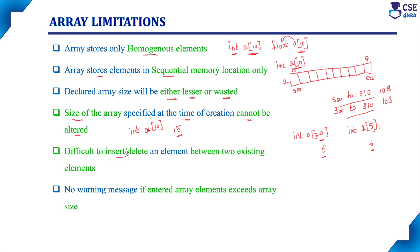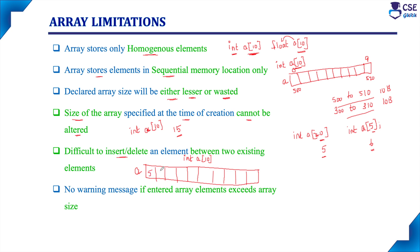Next, it is difficult to insert or delete an element between two existing elements. If I have allocated an array of 10 memory locations — int a of 10 — with values already stored, and I want to insert a value at some position, that is not possible. There is no procedure to insert an element into the array. Similarly, if I want to delete an in-between element, that is also not possible. I can only re-initialize a position to 0, but I cannot directly delete an element. So inserting or deleting between existing elements is difficult.